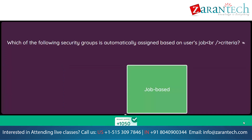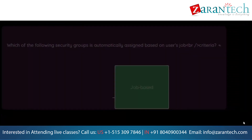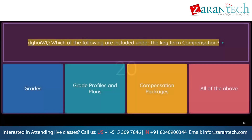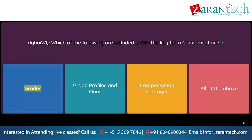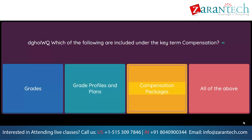Which of the following are included under the key term compensation? Option 1: Grades. Option 2: Grade Profiles and Plans. Option 3: Compensation Packages. Option 4: All of the above.